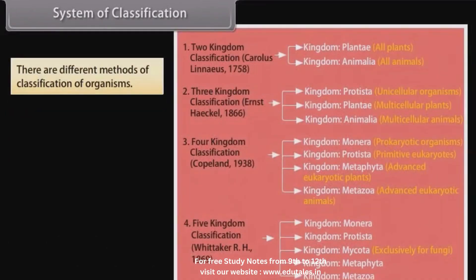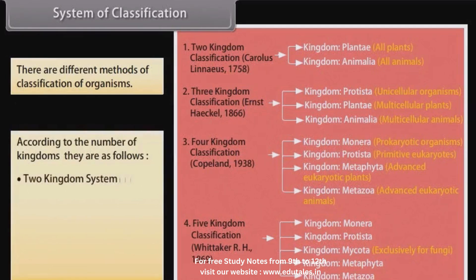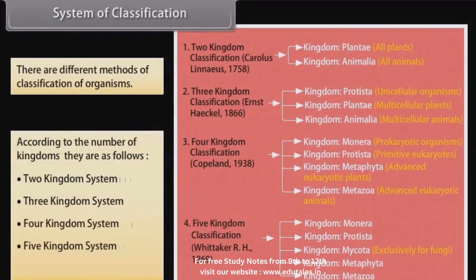There are different methods of classification of organisms. According to the number of kingdoms, they are as follows: 2 Kingdom System, 3 Kingdom System, 4 Kingdom System, 5 Kingdom System, and 6 Kingdom System.